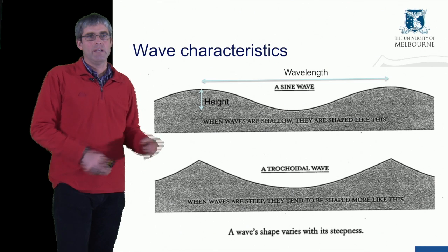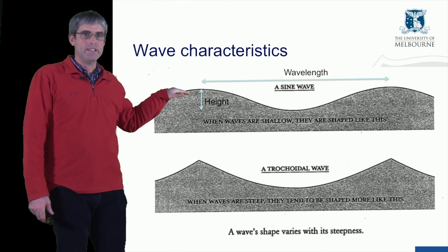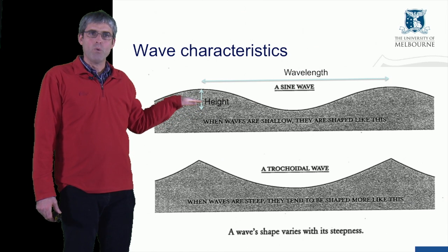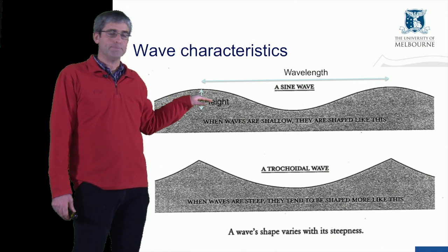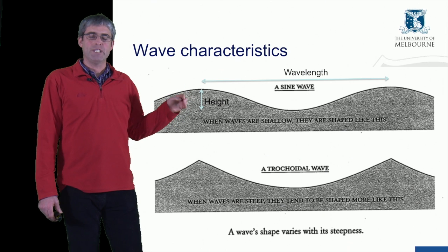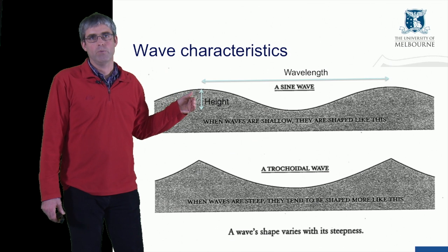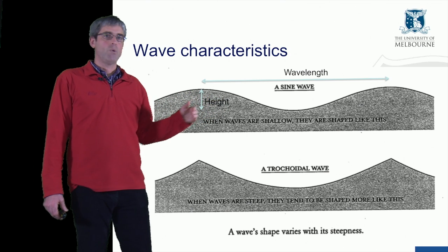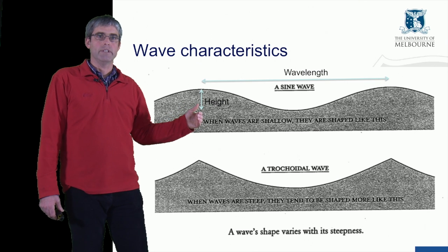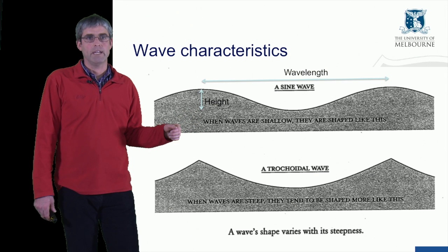The key wave characteristics are the wavelength — the distance between adjacent peaks — and the wave height, which is the difference in elevation between the peak of the wave and the wave trough. We can also talk about the wave amplitude, which is approximately half the wave height. The wave period is the time it takes for the wave to travel a distance of one wavelength. The wave speed, or celerity, is the wavelength divided by the wave period.